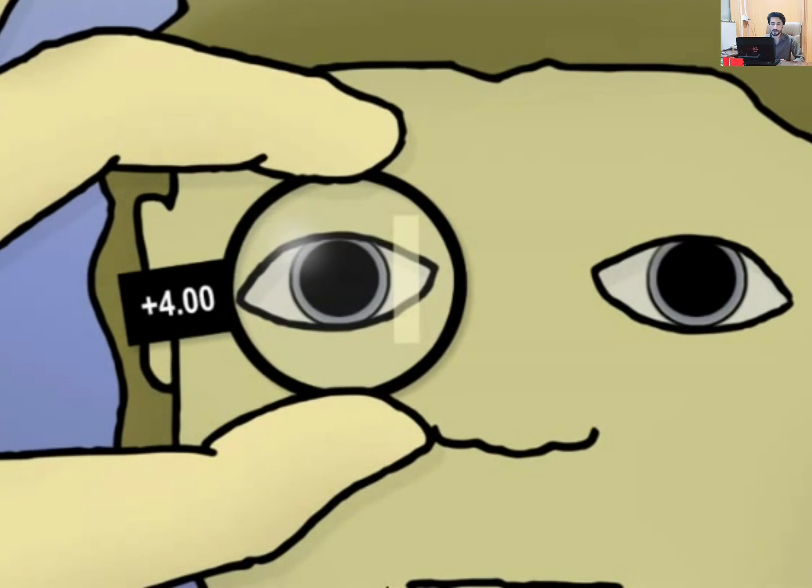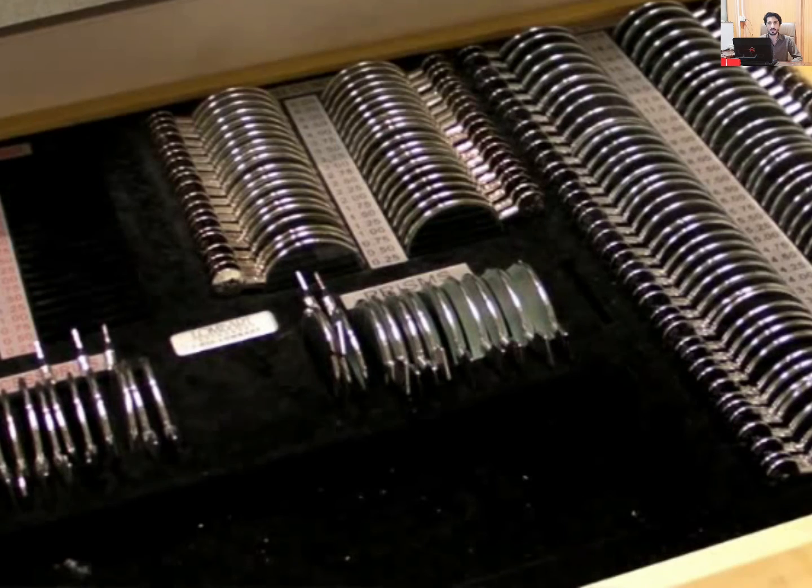Now there's a little bit of a correction factor depending upon your working distance. But this is how we figure out prescription in young kids. Say you have an 18 month old kid. You're trying to figure out if they are nearsighted or farsighted. This is how you do it. You hold up lenses in front of them.